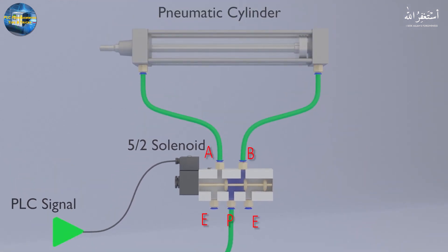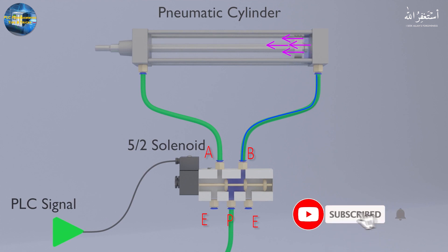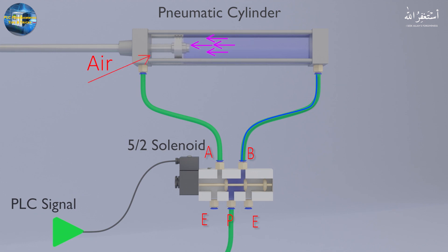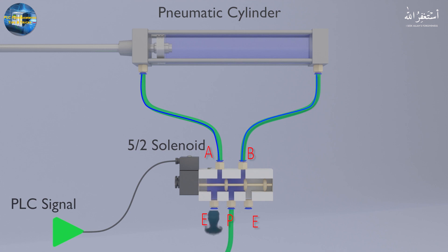This way, compressed air moves towards port B, and through the pipe it enters the back port of the cylinder. As the compressed air exerts pneumatic pressure on the piston, the cylinder shaft starts to move forward. Because of the force of the compressed air, the cylinder shaft moves forward and gets fully extended outwards. The air on the front side of the piston slowly leaves the cylinder body and comes towards port A through the pipe, where it is exhausted into the atmosphere.